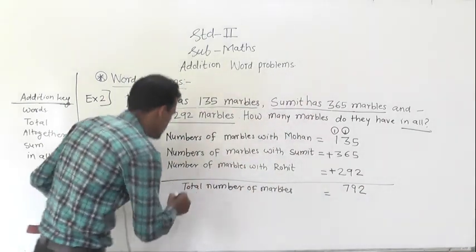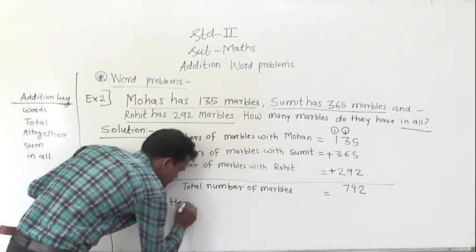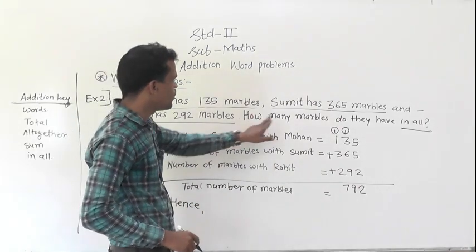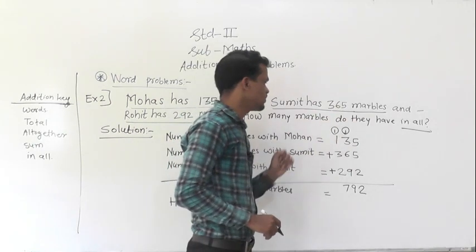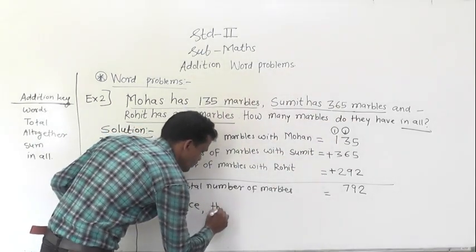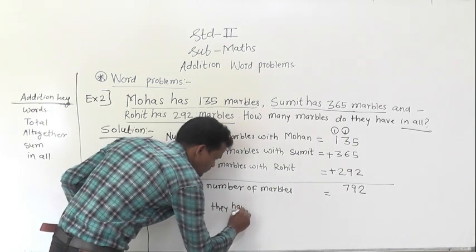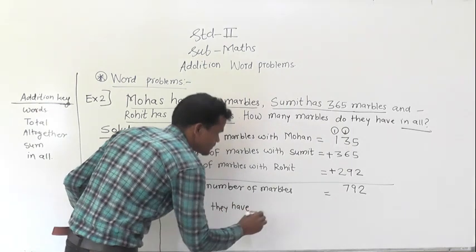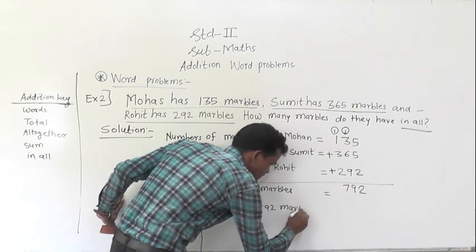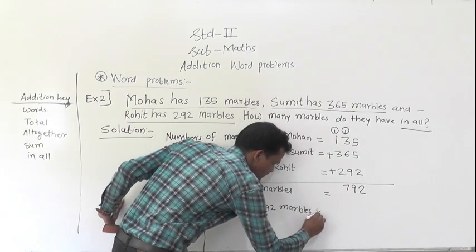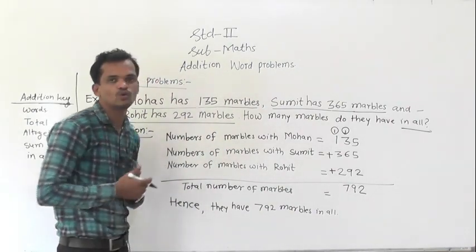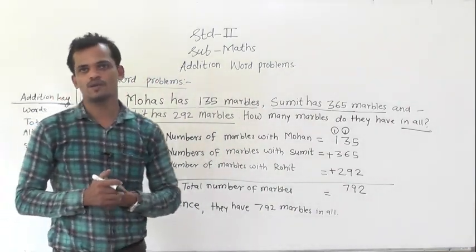Write the last statement. Hence, they have 792 marbles in all. In this way, we have to solve the word problem.